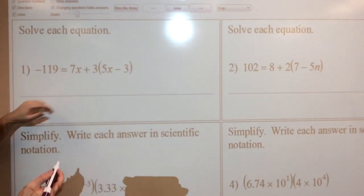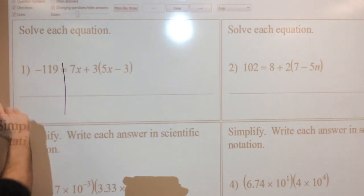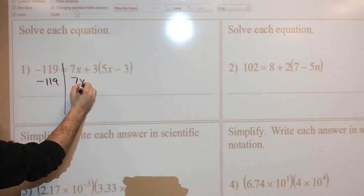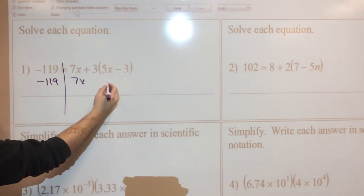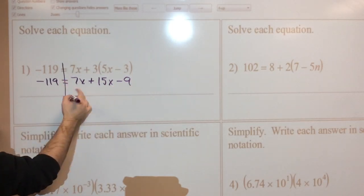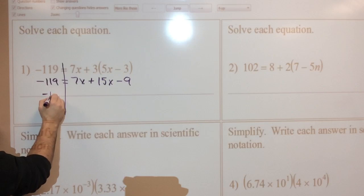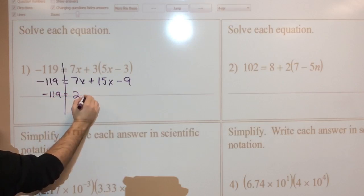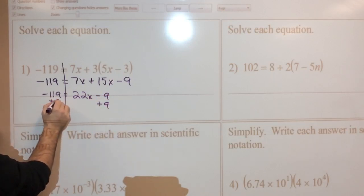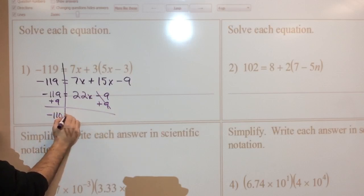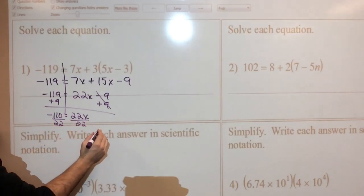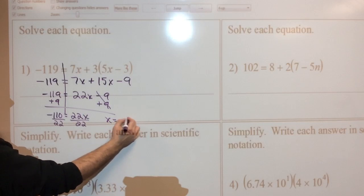Number one, solve each equation. So I'm trying to solve for x here. I can't do anything on this side, so I'm just going to leave it. This 7x is going to be brought down. The three needs to distribute to both things on the inside. So this is going to be a plus 15x. This is going to be minus 9. Now I have to combine like terms before I go any further. So this is negative 119 equals 22x minus 9. I've got to add 9 to both sides. I'm left with negative 110 equals 22x. Divide by 22 on both sides. My answer is going to be negative 5. So x equals negative 5.